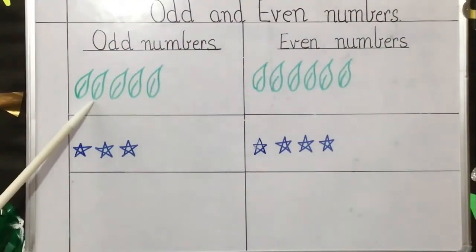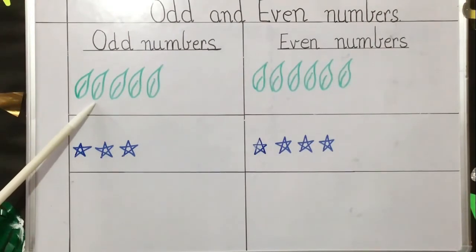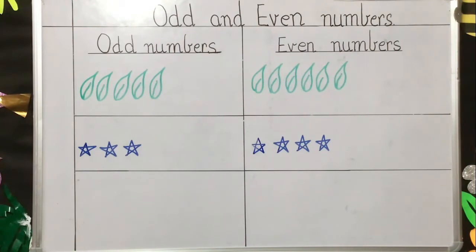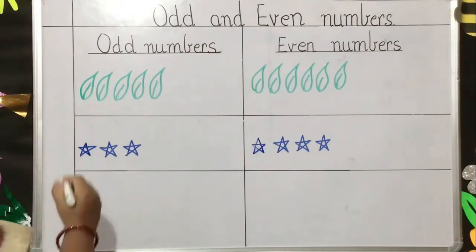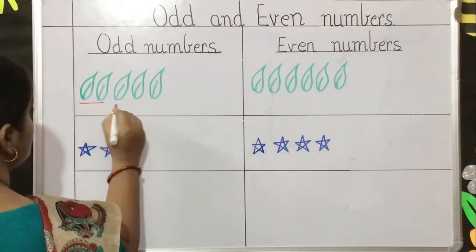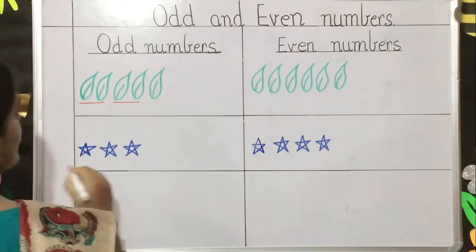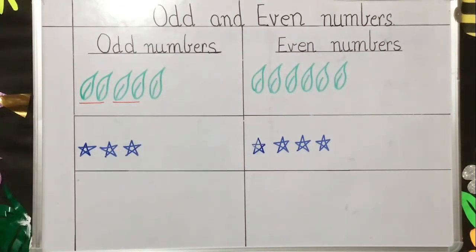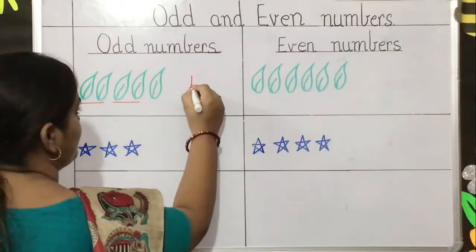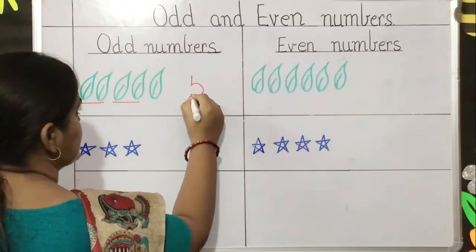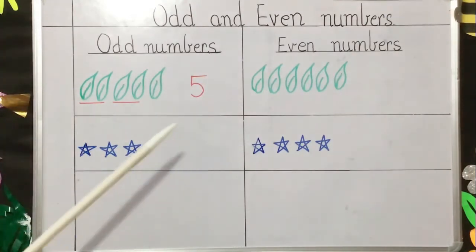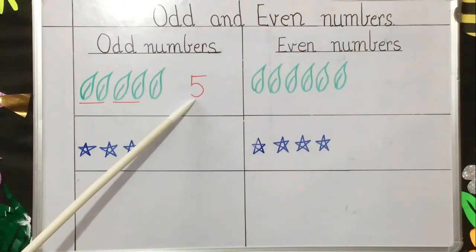Here I have drawn five leaves. Let us first try to group them in twos. First group, second group, and then one leaf is left alone. So children, the number five is an odd number because it cannot be grouped in twos.